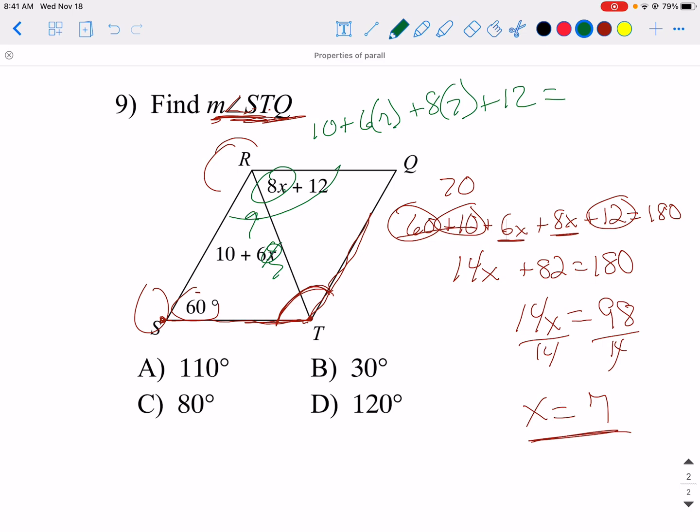So I'm just going to put that in decimals. I'm going to put, since I get it ready, I'm going to put 10 plus 6 times 7 is 42, plus 56. 8 times 7 is 56, plus 12. So I get 120 when I do that.